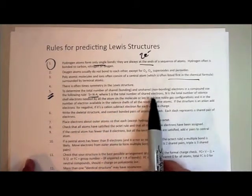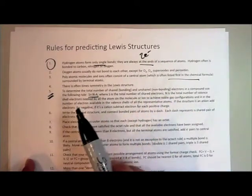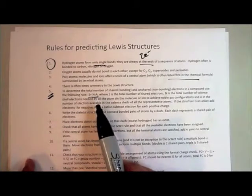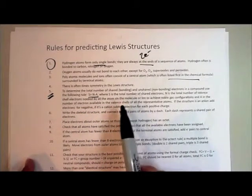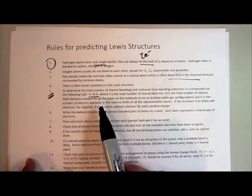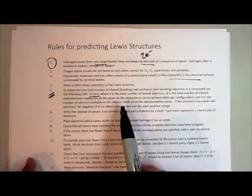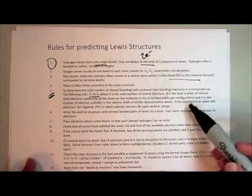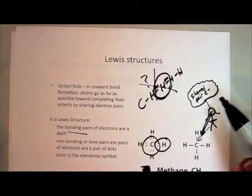n is the total number of valence shell electrons needed by all atoms in the molecule or ion to achieve noble gas configuration, and a is the number of available valence electrons in that particular element. The best thing we can do is practice, and you can refer to the rules as we go.